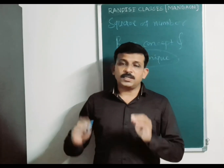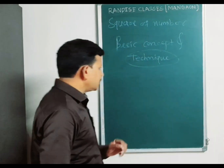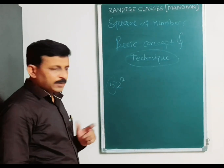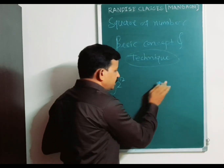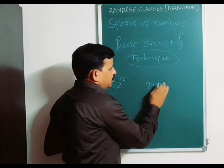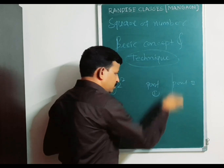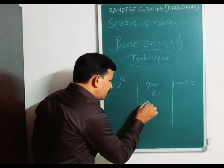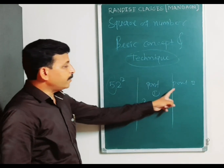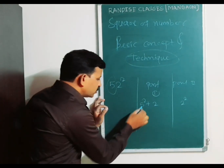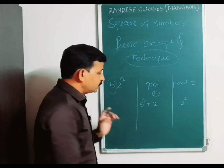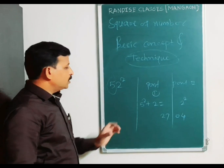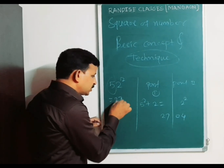Now, second thing: if the number has tens digit 5, just like 52 square. See here, 5 is the tens digit. Technique: take two parts. Part 1 is 5 square plus the unit digit 2, and part 2 is 2 square. So 5 square is 25 plus 2 equals 27, and 2 square equals 4, written as 04. Therefore the square of 52 is 2704.